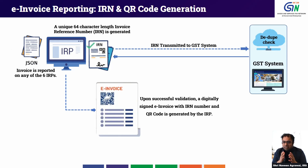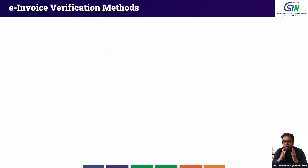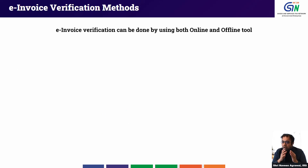The IRP also embeds or injects a QR code into the e-invoice schema, which is sent back to the taxpayer. Any invoice received from an IRP has an IRN number which is unique, and a QR code which has 11 attributes and can be used for the verification of the e-invoice. There are two methods of verification with different elements you can check via each.